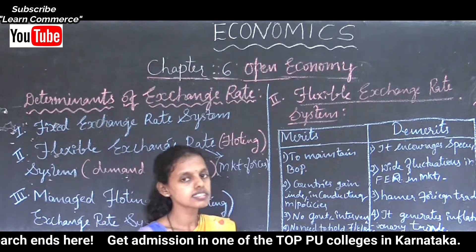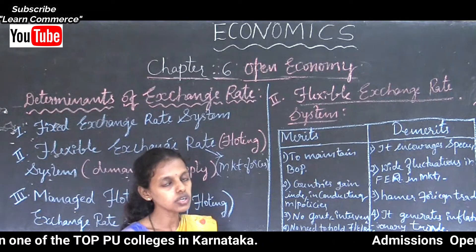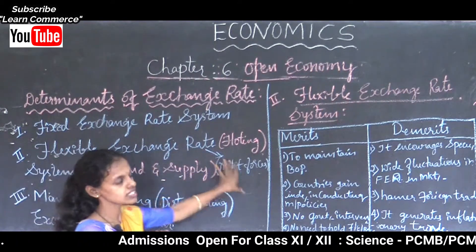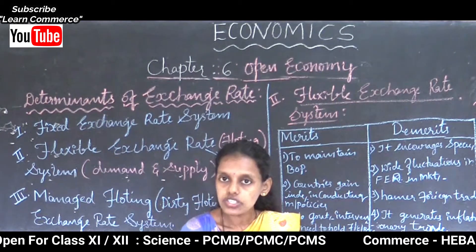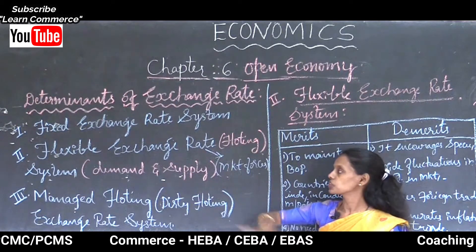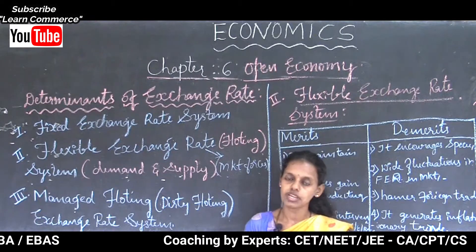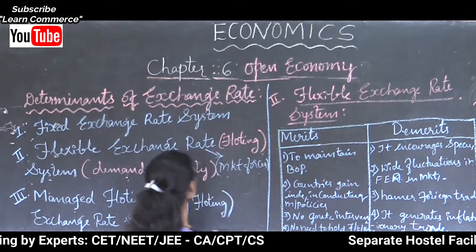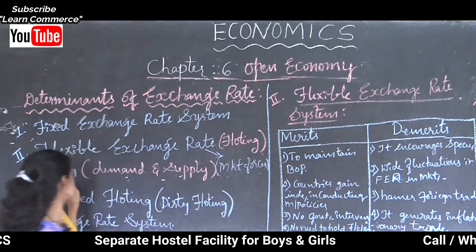If the demand increases, supply increases, and during that time the exchange rate also changes. Thus, during a deficit in the balance of payment, it may take steps through the flexible manner to change the exchange rate by seeing the demand and supply in the foreign exchange market by using official reserves. Thus, the flexible exchange rate system is also called the floating exchange rate system.